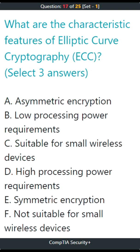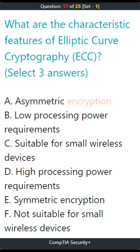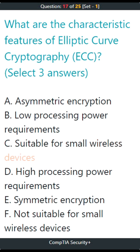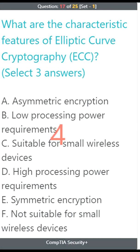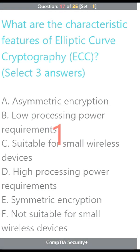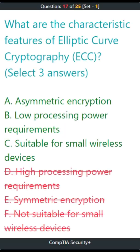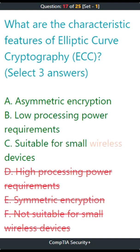Question 17. What are the characteristic features of elliptic curve cryptography (ECC)? Select three answers. A. Asymmetric encryption, B. Low processing power requirements, C. Suitable for small wireless devices, D. High processing power requirements, E. Symmetric encryption, F. Not suitable for small wireless devices. The correct answers are A. Asymmetric encryption, B. Low processing power requirements, C. Suitable for small wireless devices.